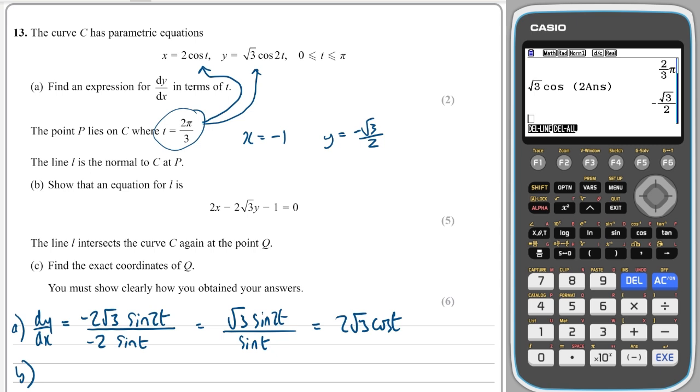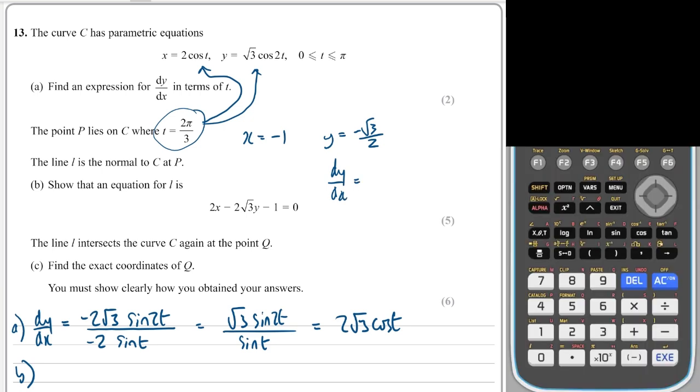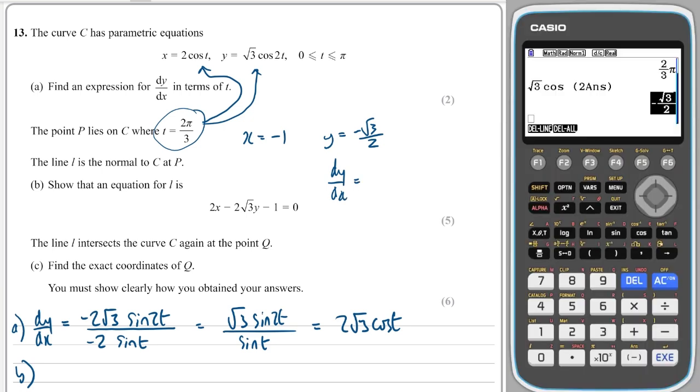Then I will also need to sub it into the gradient as well. So I will press delete line and sub into 2√3 cos of the answer and I'll get minus √3. So the normal gradient is a negative reciprocal, so that's 1 over √3.